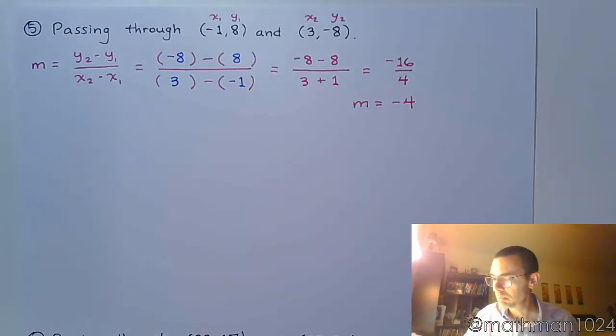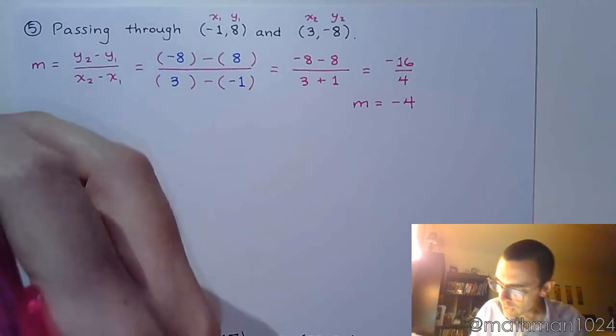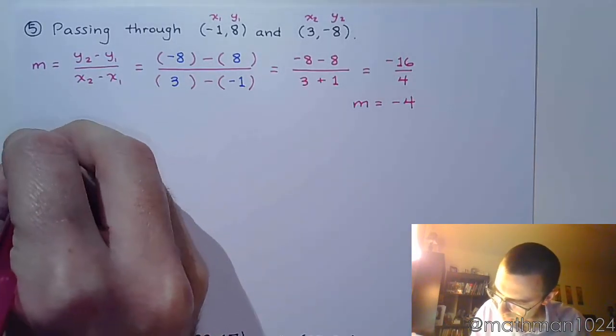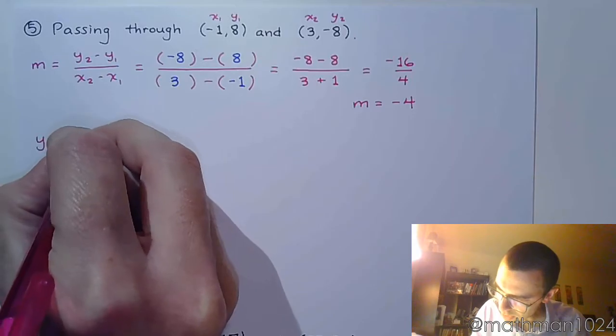So now I've got my slope. And I've got two points to pick from. It doesn't matter which point I choose, they're both on the same line. So use the slope, pick a point, and it's just like the problems that we had in the last video. So down here, let me go ahead and say that y equals mx plus b, and let's see what we get.